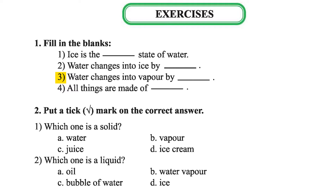Number 3: Water changes into vapor by blank. Vapor means the gaseous state of water. Water changes into vapor — in which way? By adding heat.